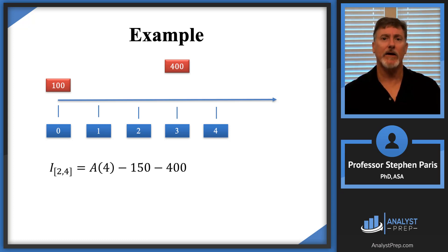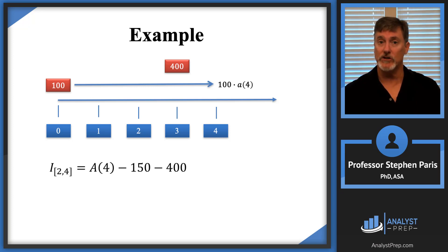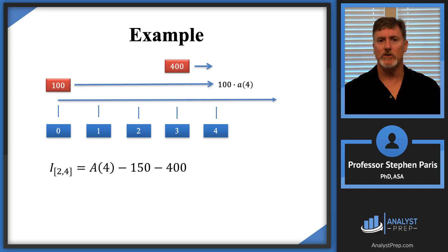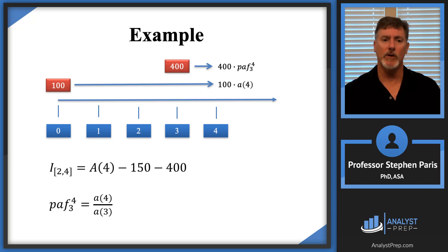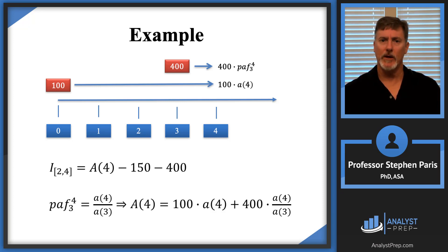Now let's calculate the amount in the account at time 4. I need to accumulate the $100 to time 4, which gives 100 × A(4). I also need to accumulate the $400 from time 3 to time 4. The $400 accumulates using the periodic accumulation factor from time 3 to time 4, which equals the ratio A(4) / A(3). So the total at time 4 is: 100 × A(4) + 400 × (A(4) / A(3)).